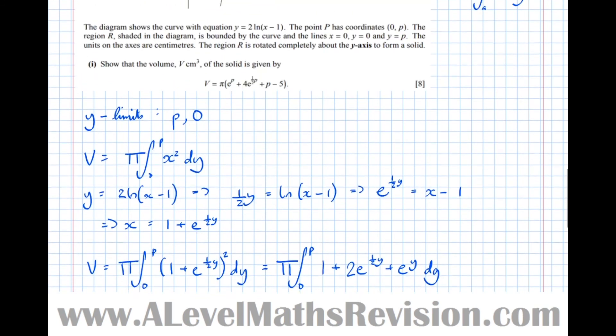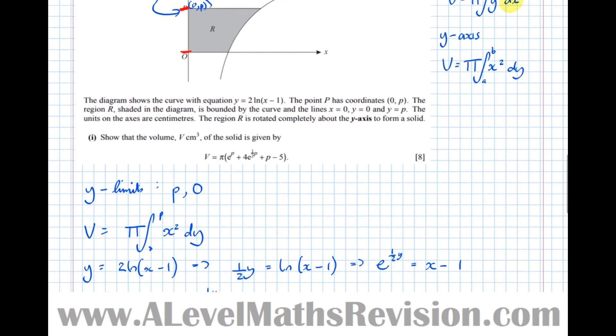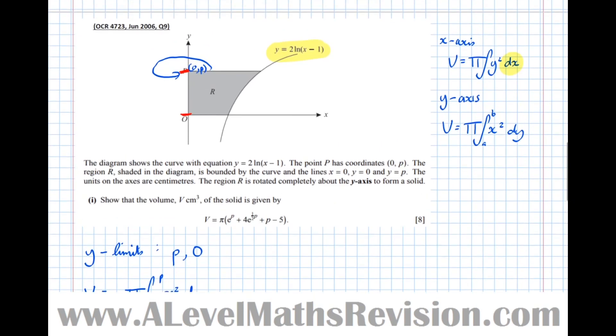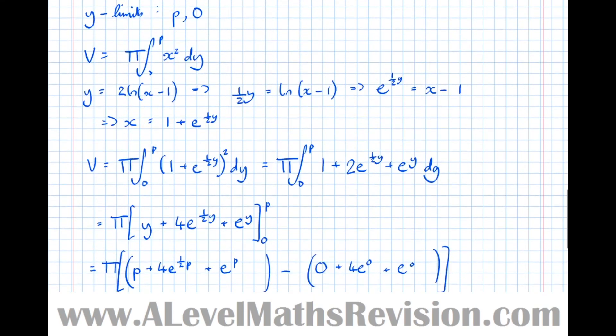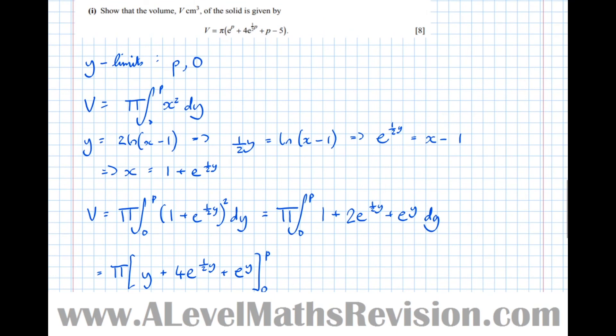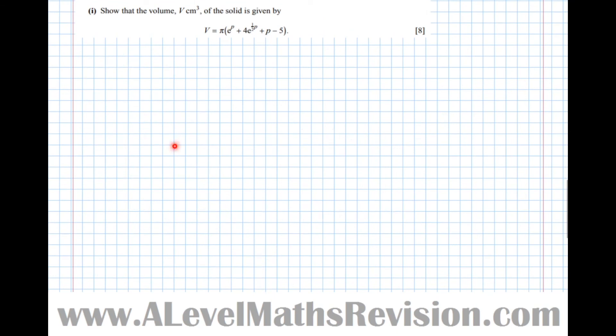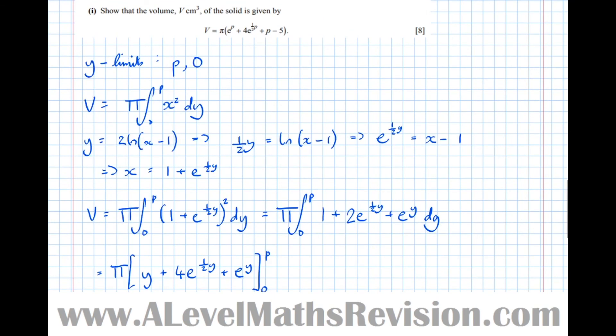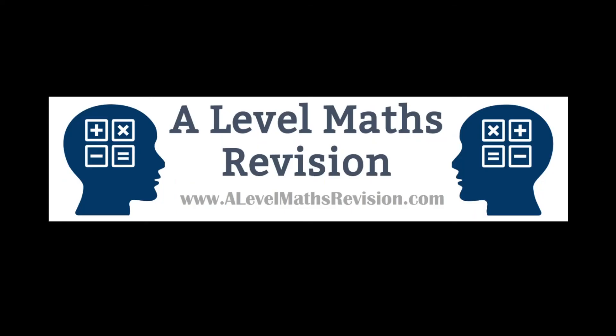So just to wrap things up. When we're rotating around the y-axis, the formula is instead x squared dy, not y squared dx. So we need to rearrange the equation to say x equals, like we did here, and then sub that into the formula. And remember, use y limits, not x limits when rotating around the y-axis. For more videos like this, subscribe to our YouTube channel. And to find out more about our Skype tuition and revision courses, go to a-levelmapsrevision.com.